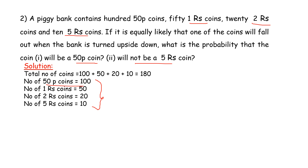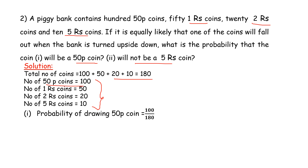What is the probability of drawing a fifty-paise coin? The number of fifty-paise coins is 100. So the probability is 100 divided by the total number of coins, which is 180.